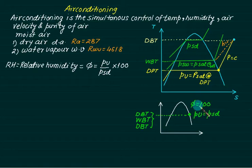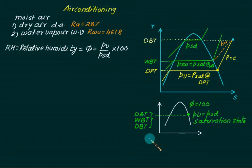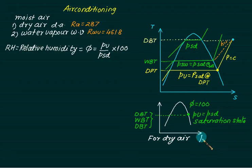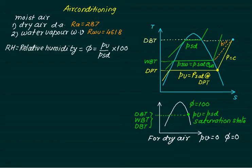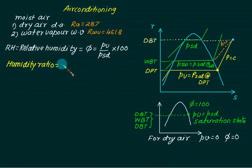At the saturation point, Pv = P_sd, so phi = 100%. The maximum value of phi is 100. For dry air, there is no moisture, so Pv = 0 and phi = 0. For saturated (moist) air, phi = 1 (i.e., 100%). So phi ranges from 0 (dry air) to 100% (saturated air).